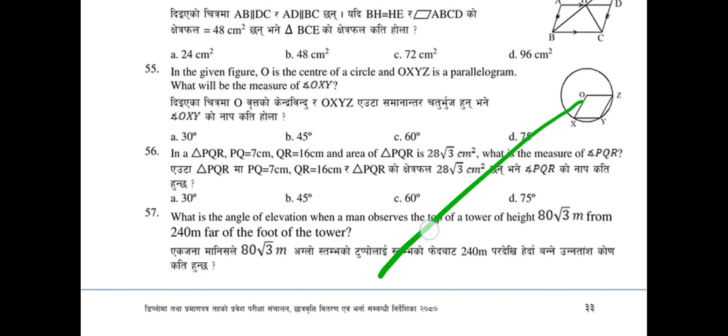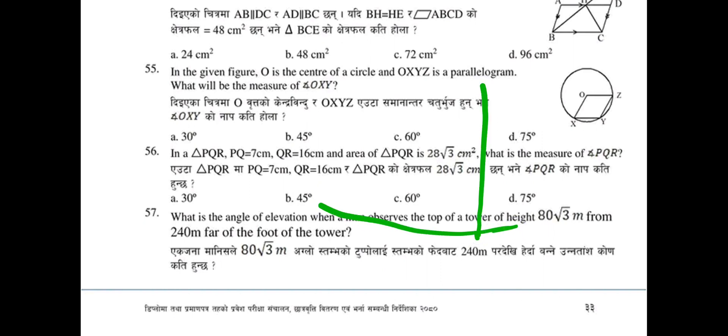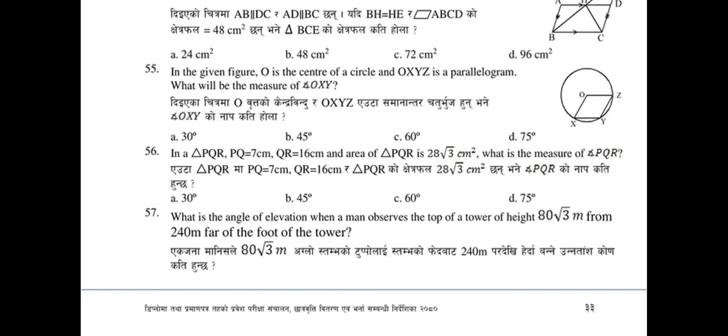Using trigonometry and relevant theorems, the answer to question 57 for angle of elevation is 30°. Options presented were 30°, 60°, and 90°.